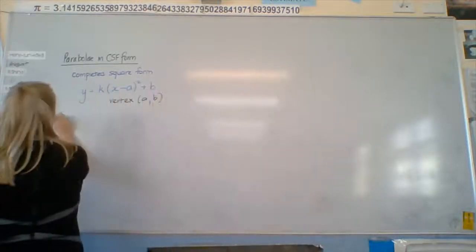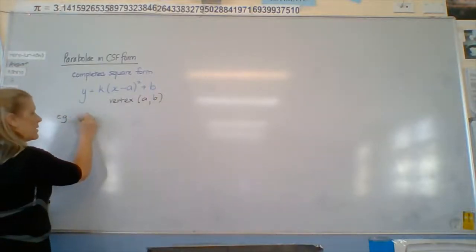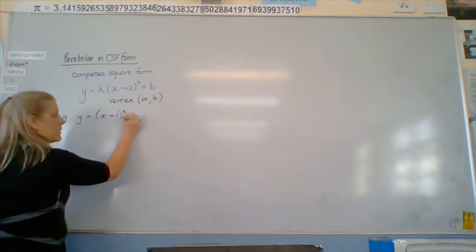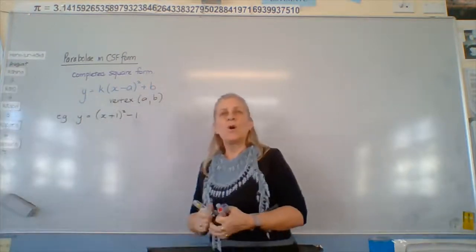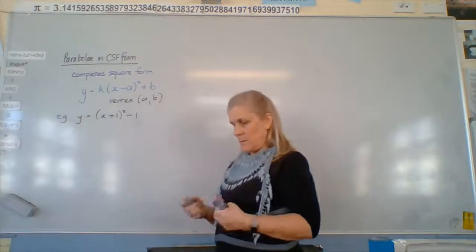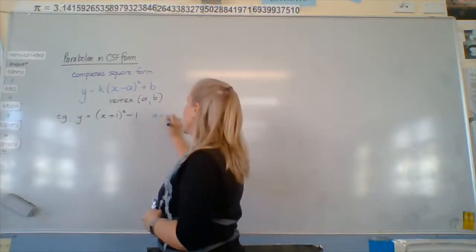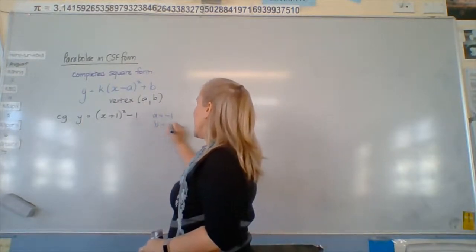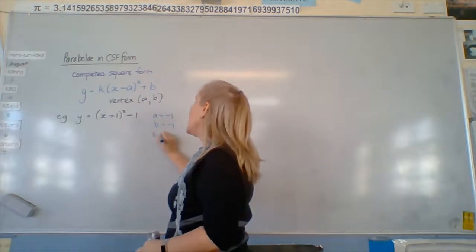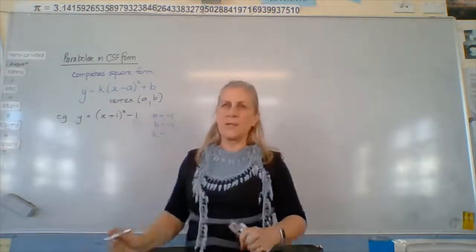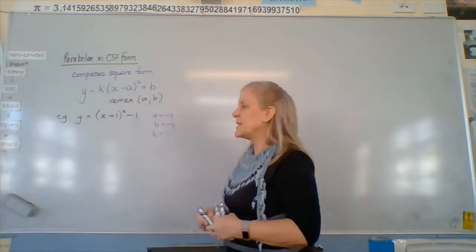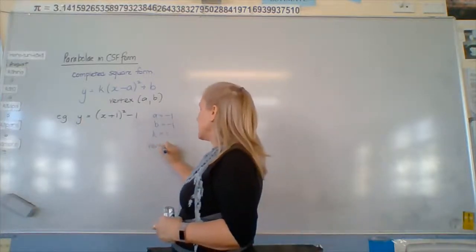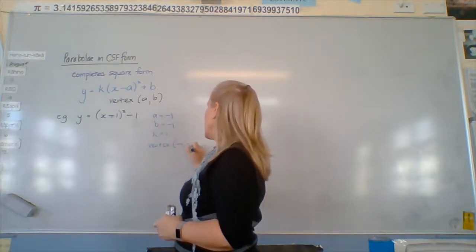So what will a be? Negative one. Negative, good. a will be negative one, b will be? One. And k will be? One. Zero means that the whole thing's gone away. So we need a k to be at least one. So that tells us that the vertex is at negative one, negative one.